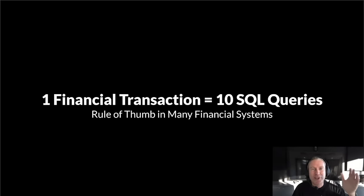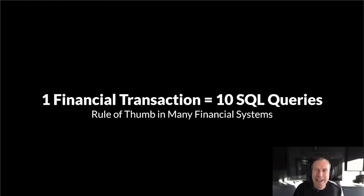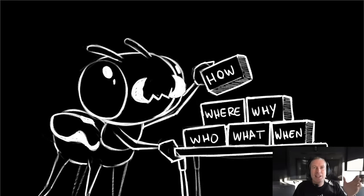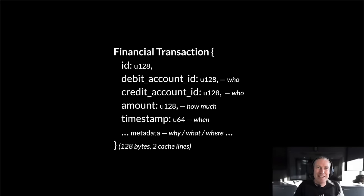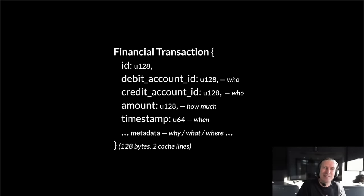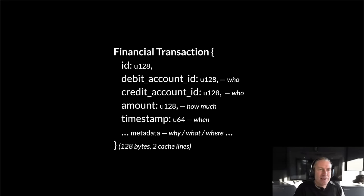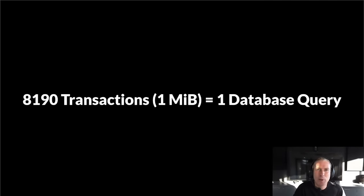Of course you can use stored procedures to get this down to one, but that's only a 10x win. So we stepped back and said debit-credit is actually a pretty solid schema — everything you need to represent the who, what, when, where, why, and how much of business. It's also small: you can pack one financial transaction into 128 bytes, just two CPU cache lines. Why not pack a few thousand together — put 8,000 of these 128-byte transactions in one query? That would give at least 1,000 times more performance.